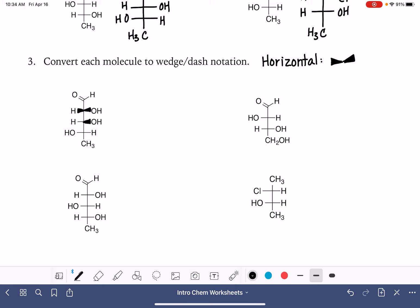So all of these horizontal bonds, they are all wedge bonds like that. And then for the vertical bonds, the vertical bond that is at the very top is a dash. And the vertical bond that is at the very bottom is also a dash. And that's all that we need to do for these conversions.